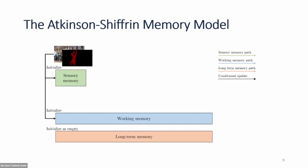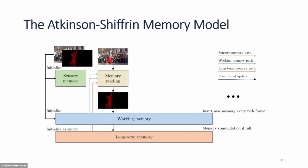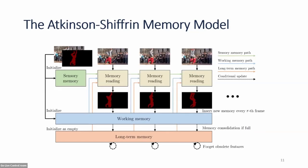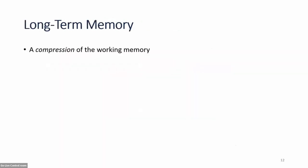Given the input image and mask, we initialize sensory memory and working memory; long-term memory starts empty. As new frames come in, we perform memory reading from all three types of memory, producing a unified representation used to generate a new mask. With this mask, we update all three types of memory. The sensory memory is updated every frame, the working memory every hour-th frame (where h may be 5 or 10), and the long-term memory only when the working memory becomes full. These three types of memory update at different frequencies.